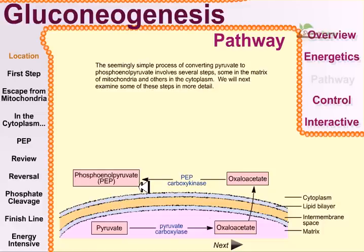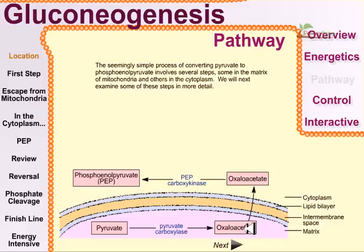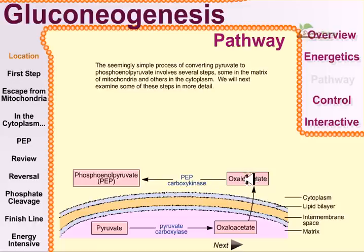For the reverse reaction we need two important enzymes. The first is pyruvate carboxylase, which acts on pyruvate, adds carbons, and generates oxaloacetate. Oxaloacetate is then carried through the mitochondrial membrane channel to the cytoplasm, where it is converted into phosphoenolpyruvate with the help of the enzyme phosphoenolpyruvate carboxykinase (PEPCK), which acts on oxaloacetate to generate PEP.